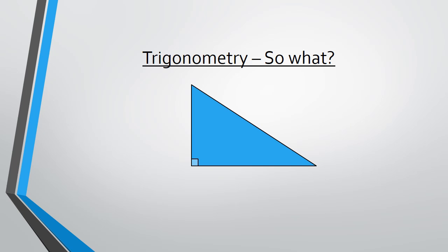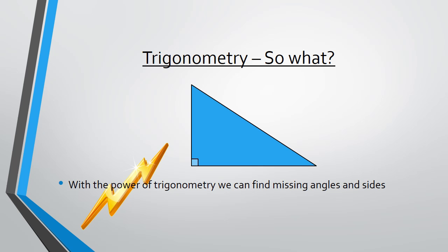Trigonometry. So what? So we've got a right angle triangle. With the power of trigonometry, we can find missing angles and sides.